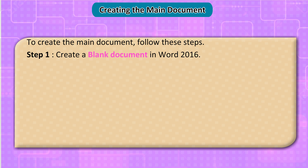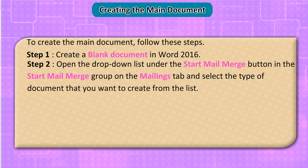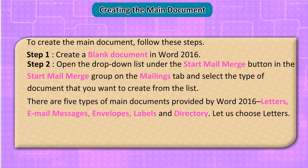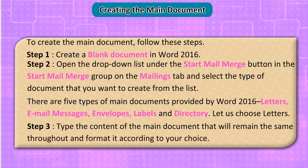Creating the main document: follow these steps. Step 1: create a blank document in Word 2016. Step 2: open the drop-down list under the Start Mail Merge button in the Start Mail Merge group on the Mailings tab, and select the type of document you want to create. There are five types of main documents provided by Word 2016: letters, email messages, envelopes, labels, and directory. Let us choose Letters. Step 3: type the content of the main document that will remain the same throughout, and format it according to your choice.